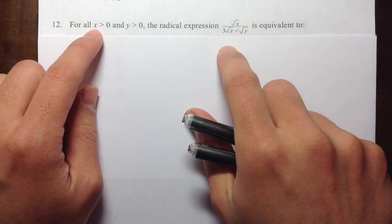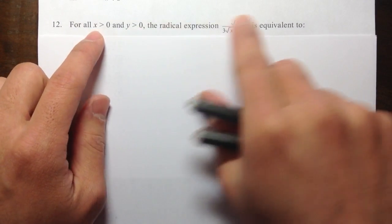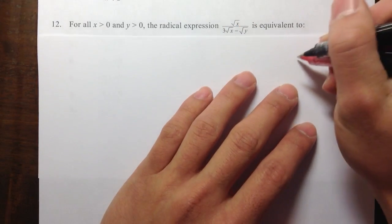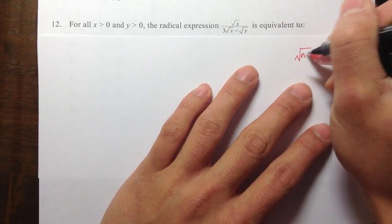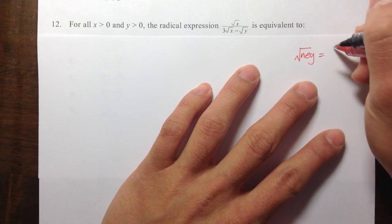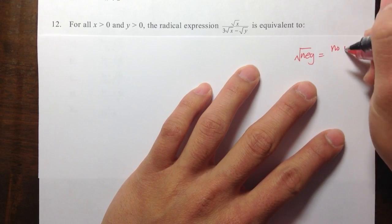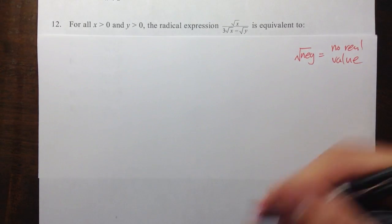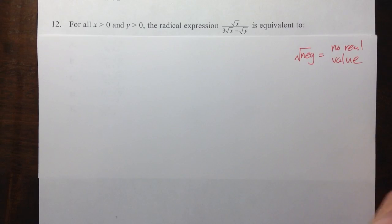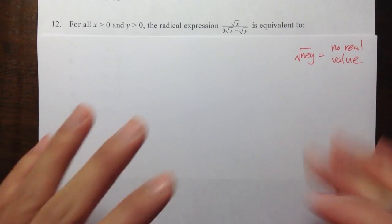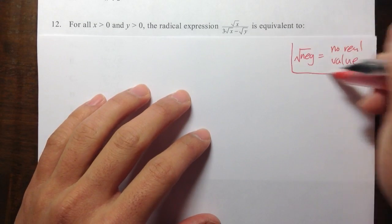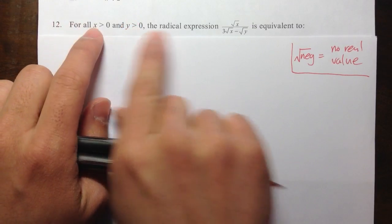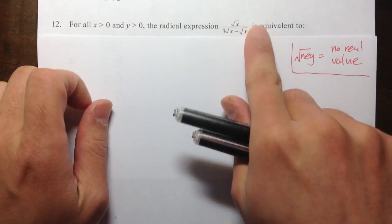The reason they say x and y have to be positive is because if you have a square root of a negative number, this has no real value — you'd have to deal with imaginary numbers, but they don't want us to do that. So they want to make sure we're dealing with just positive numbers inside the square roots.